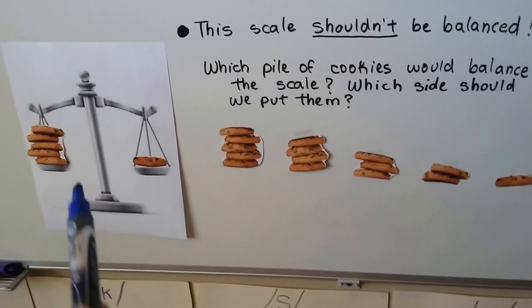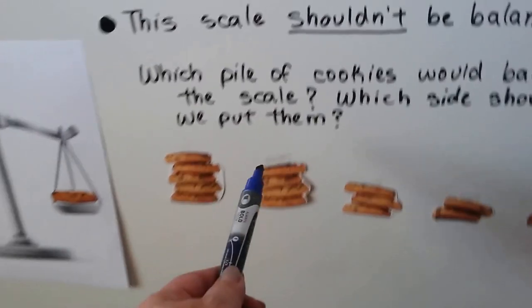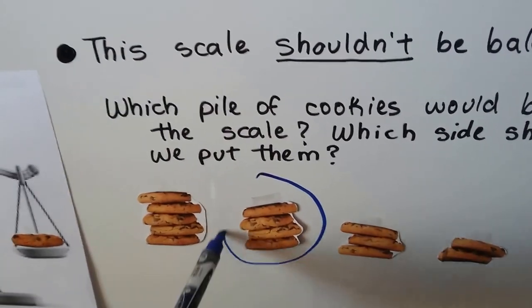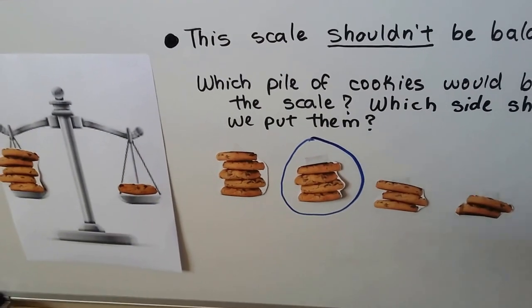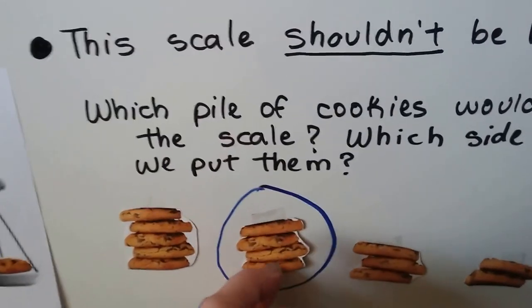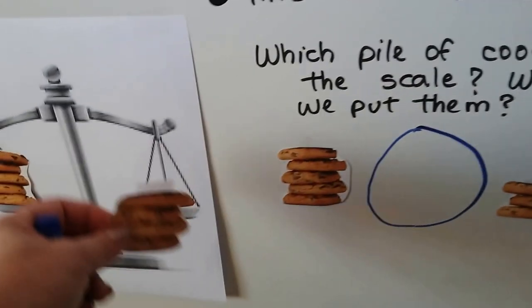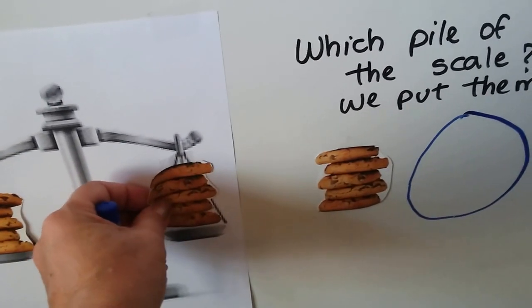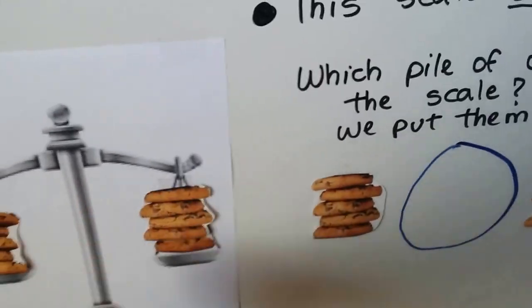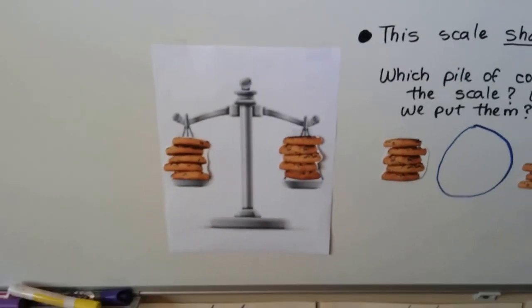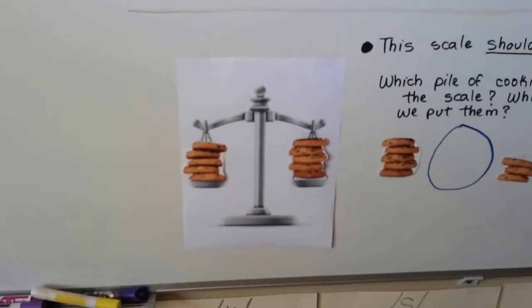Well, if you said the four cookies, you're right, because four plus one is five. If this pile of cookies was over here, we can actually move it. We'd see that they'd be the same. And then the scale would be even. They'd be the same weight.